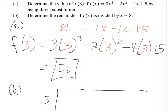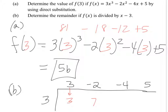Notice what we did a moment ago — we plugged 3 into the function. Now we're also putting 3 on the outside because we're dividing by x minus 3. Let's put our coefficients along the top. Bringing down the 3, 3 times 3 is 9, 9 minus 2 is 7. 3 times 7 is 21, 21 minus 4 is 17. 3 times 17 is 51, 51 plus 5 gives me 56.